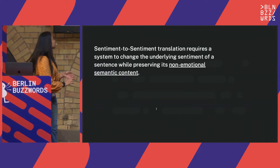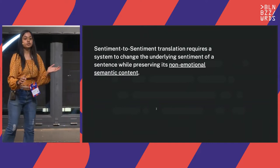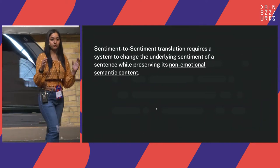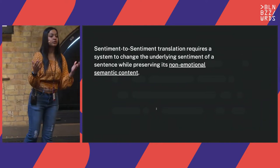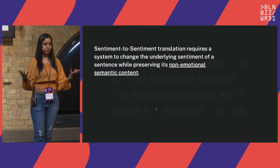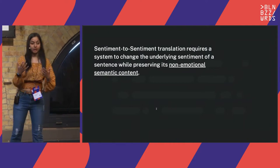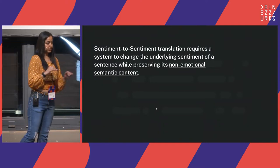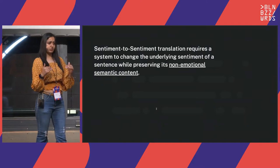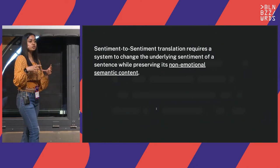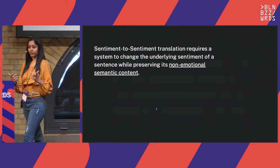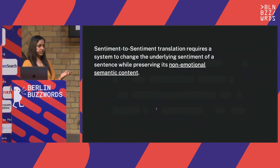Whenever we have a sentence which is sentiment-based or has an emotion, we call it a style — style is emotion and sentiment, and both can be a combination or multiple in one sentence. The underlying context of that sentence should not be changed whenever we perform a style transfer. That is what sentiment-to-sentiment translation is all about.